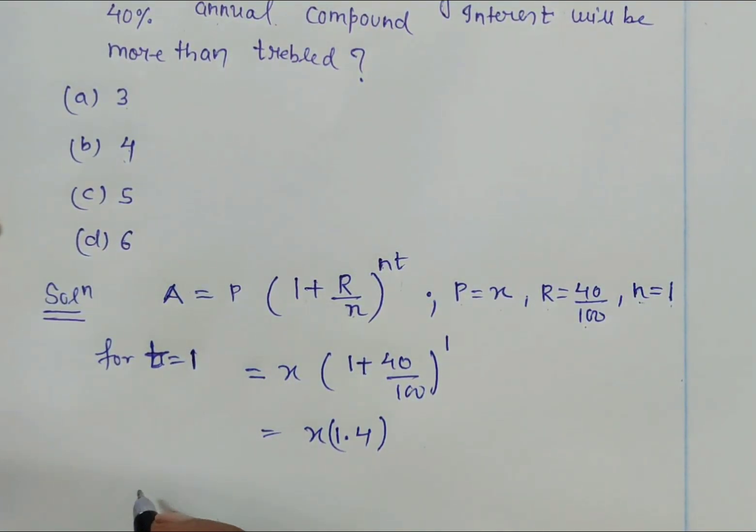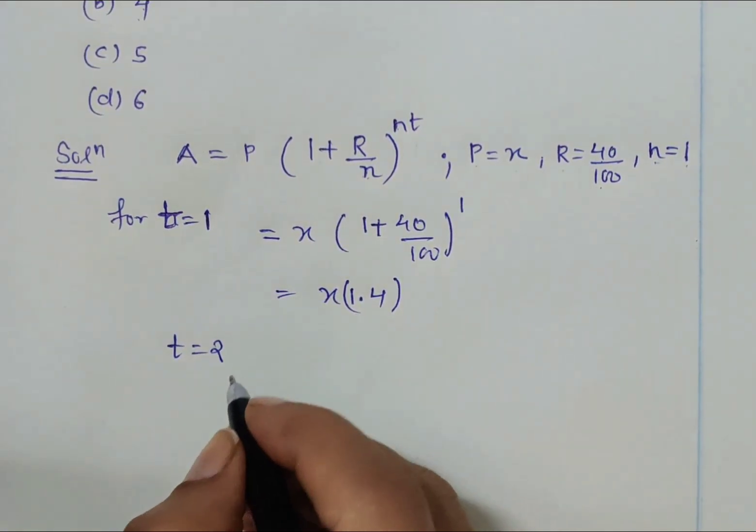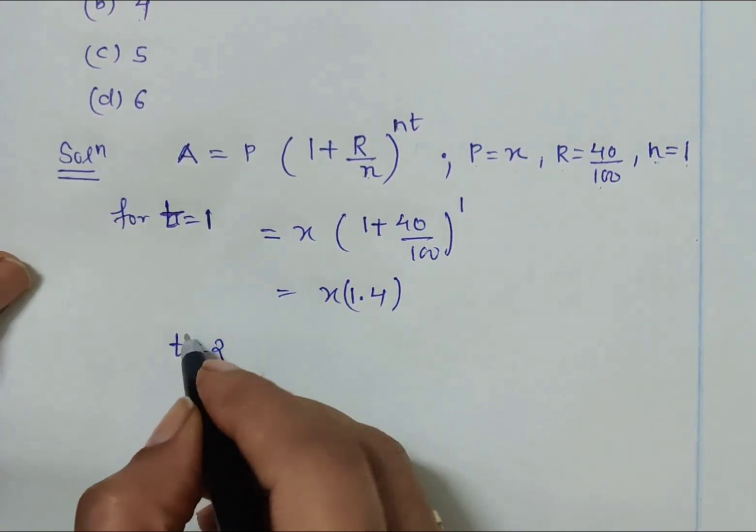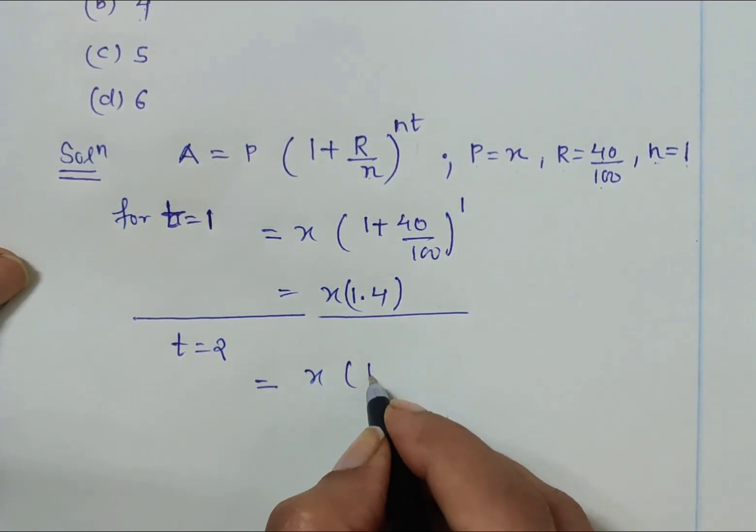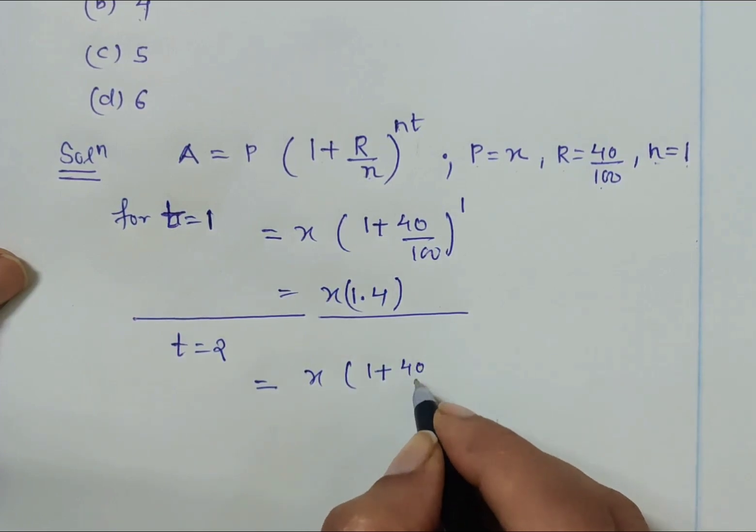For t = 2, when we calculate we get x times (1 + 40/100)^2.